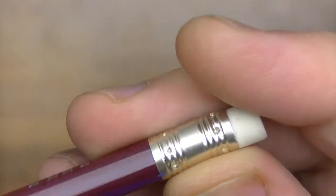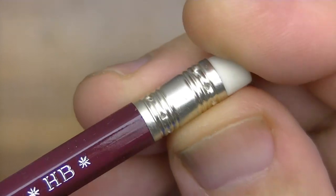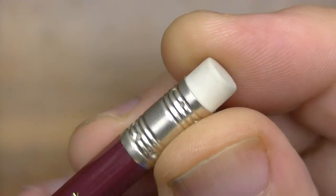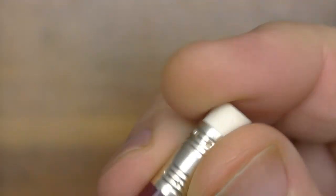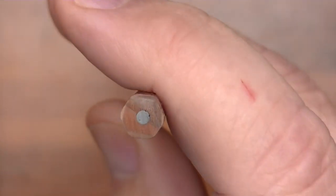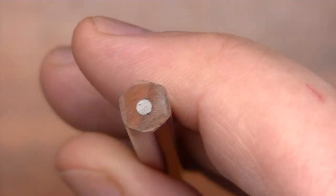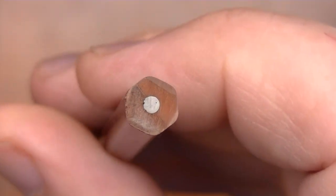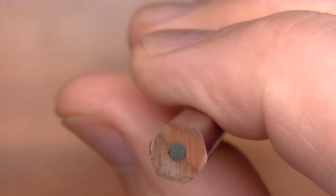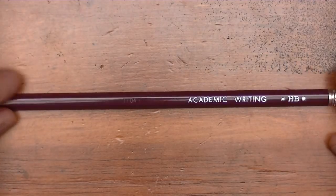The ferrule is the standard silverish kind with a marshmallow white eraser on here. Looking at the tip, we see that it has a standard size graphite core and it's centered within what appears to be cedar wood.